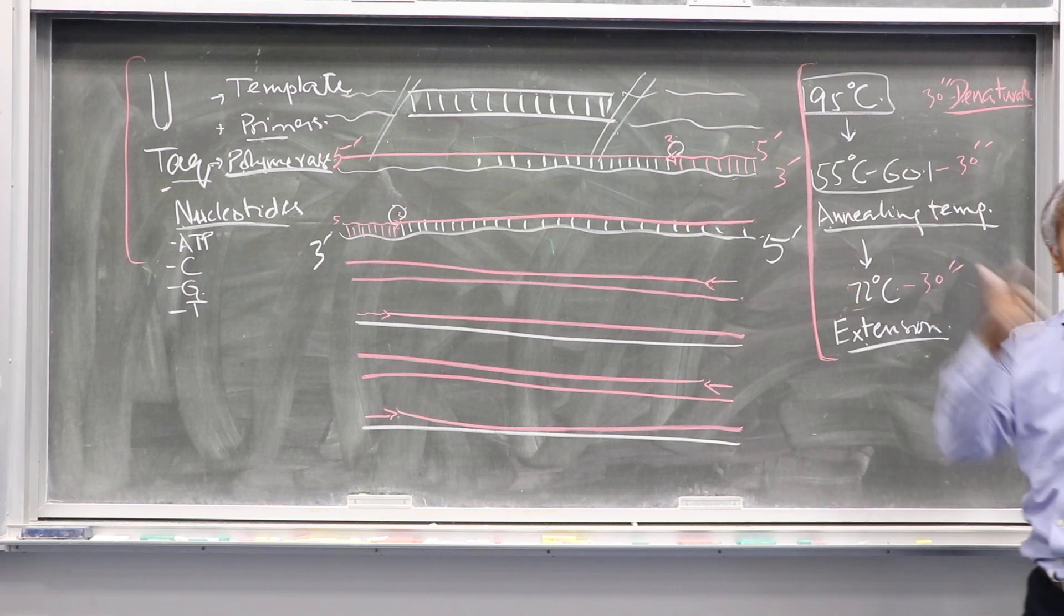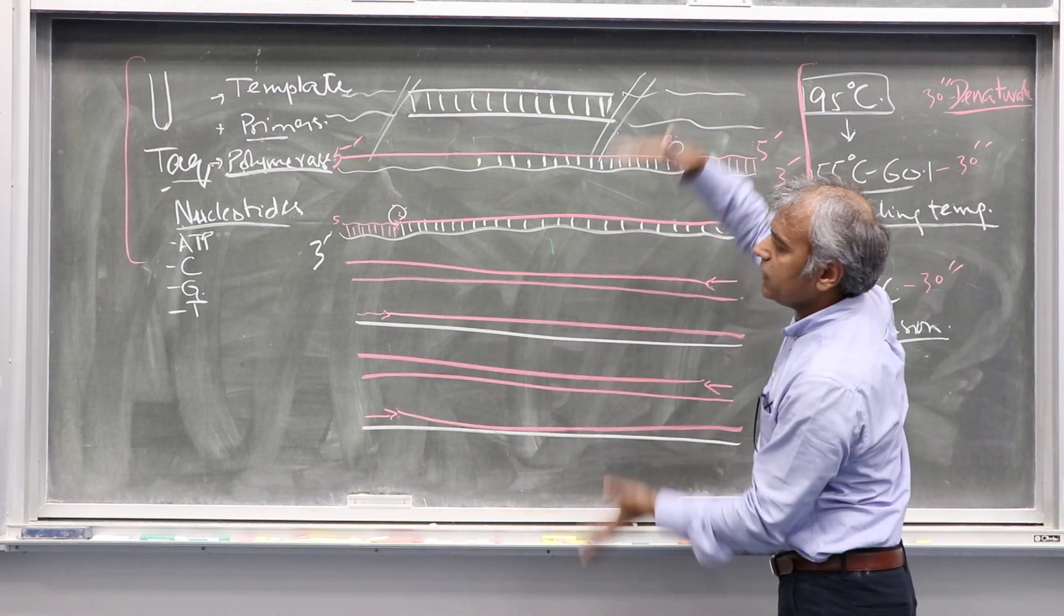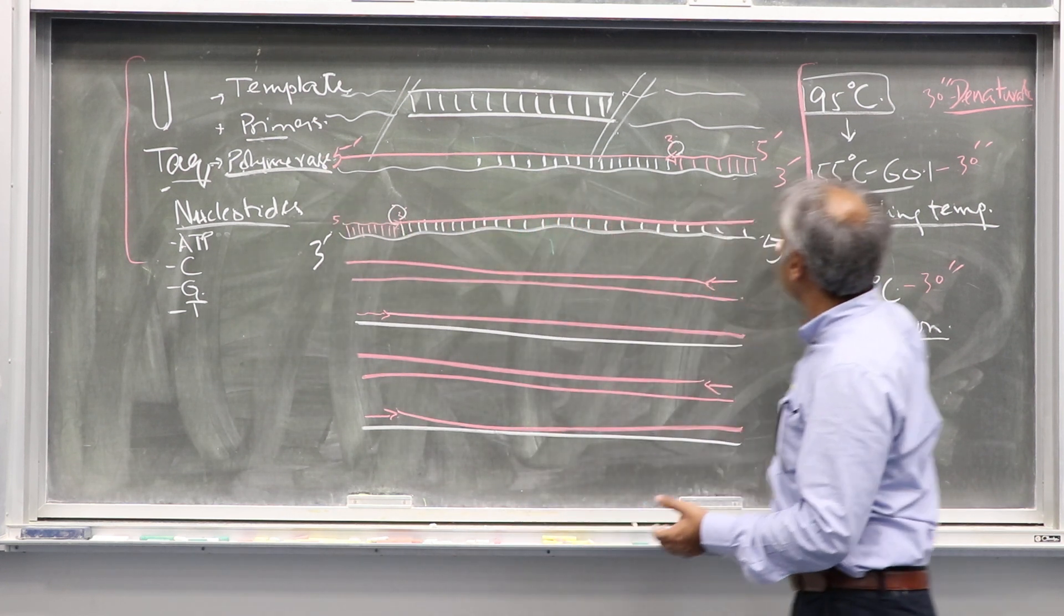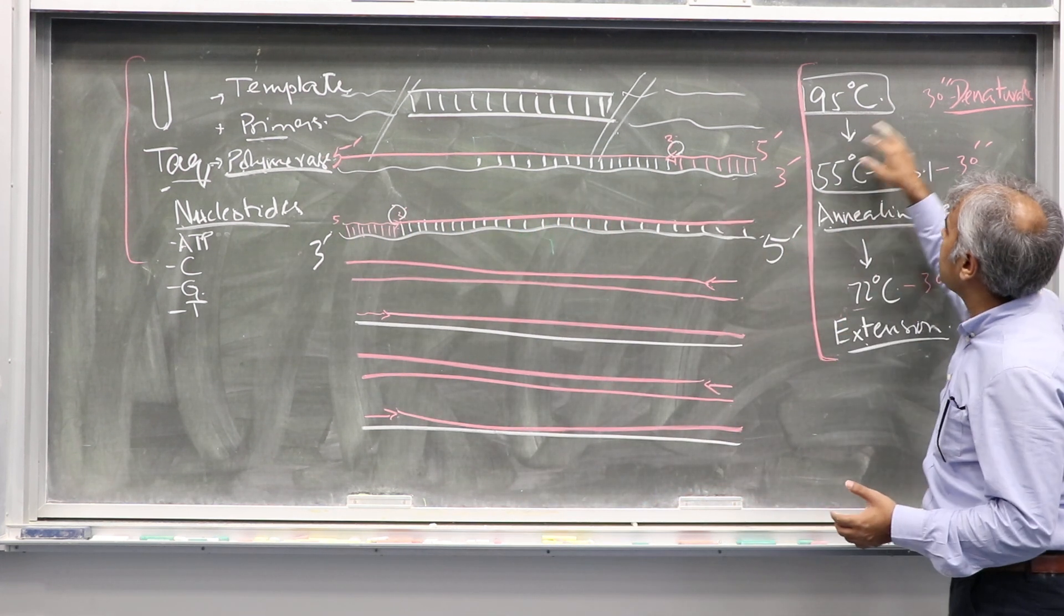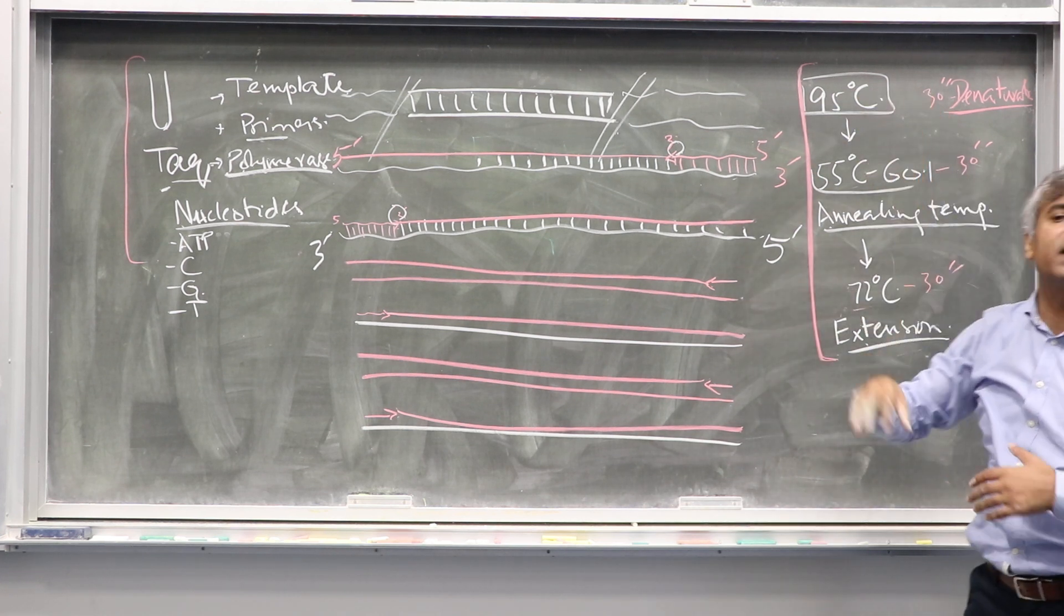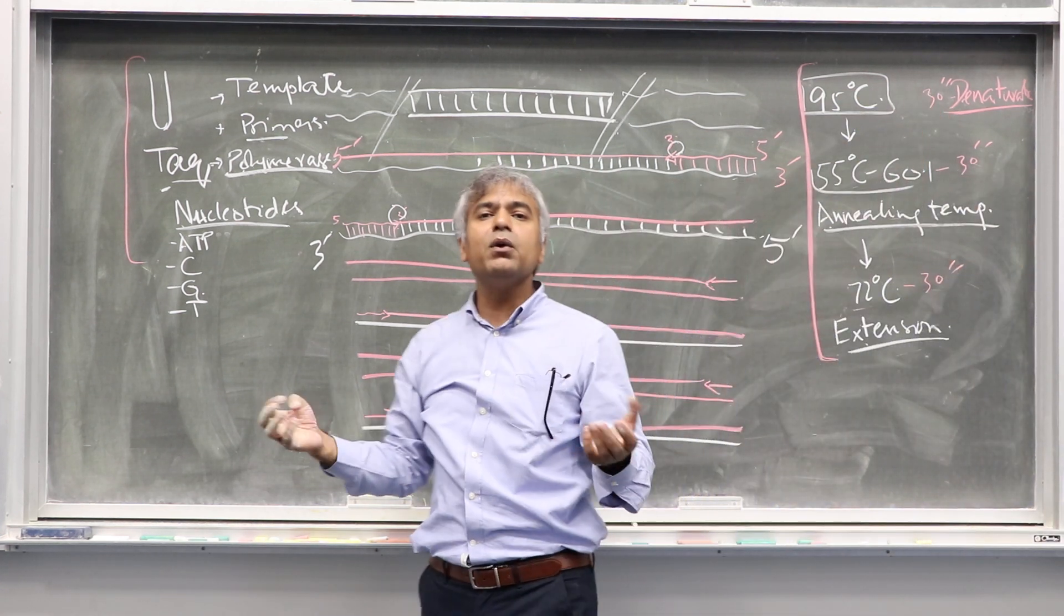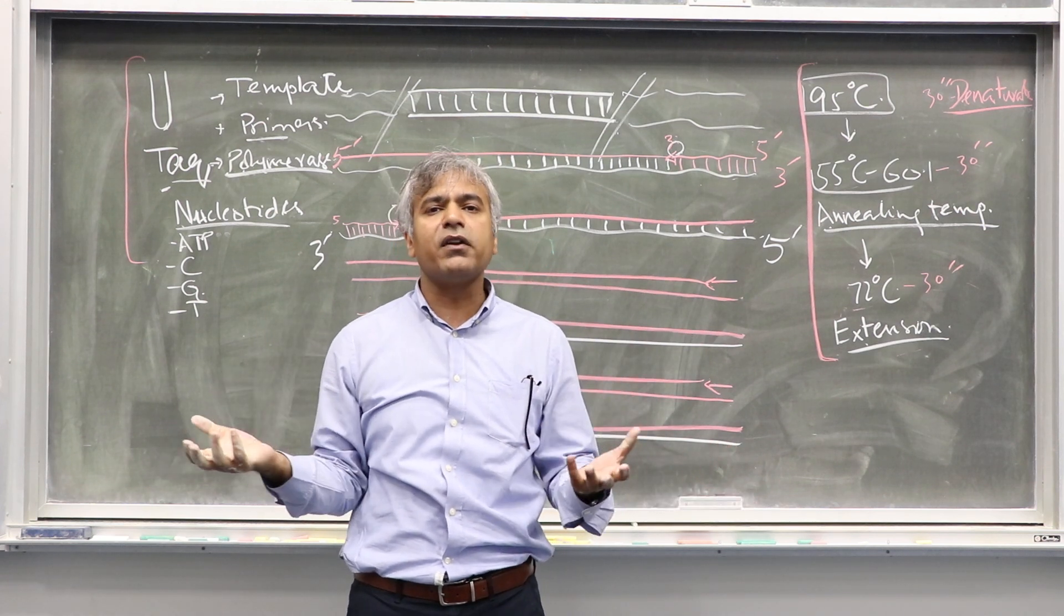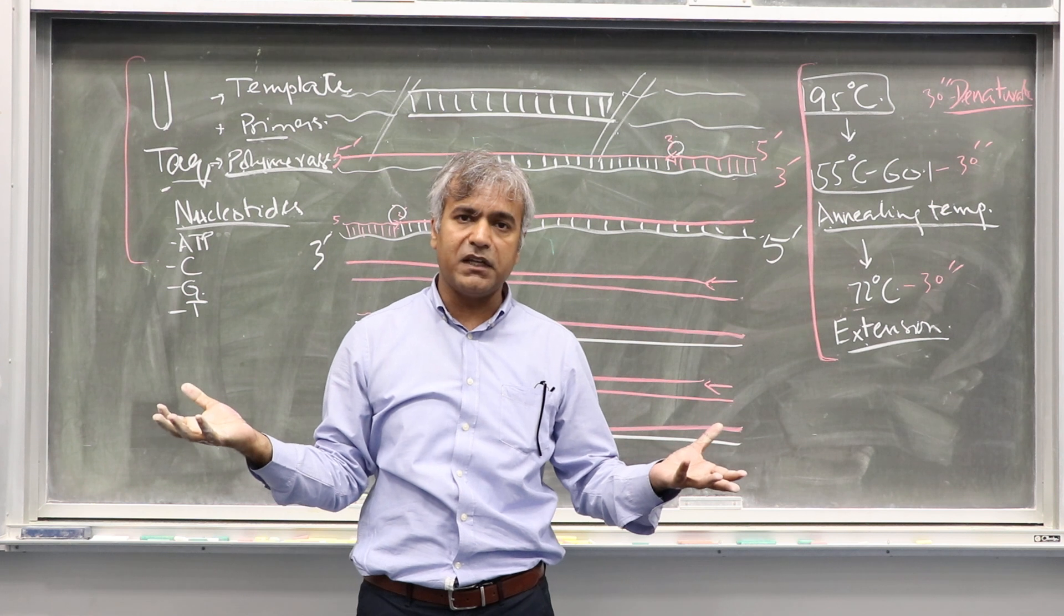Because denaturation, annealing, extension—denaturation, annealing, extension—it's going in a cycle again and again. DNA is getting denatured, primers are coming and binding, polymerase is extending in the extension phase. After the whole 35 cycles, you will have massive amount of DNA. If you start from a few nanograms, you will have micrograms of DNA.